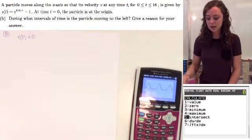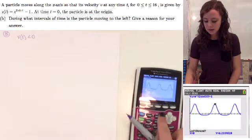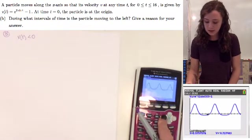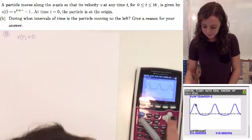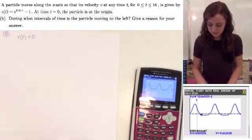So in order to find the actual values of these, we can go ahead and use the calculation function on your calculator to find the zeros. So we're going to go ahead and do that, and we'll find the first zero. And the first zero is pi.